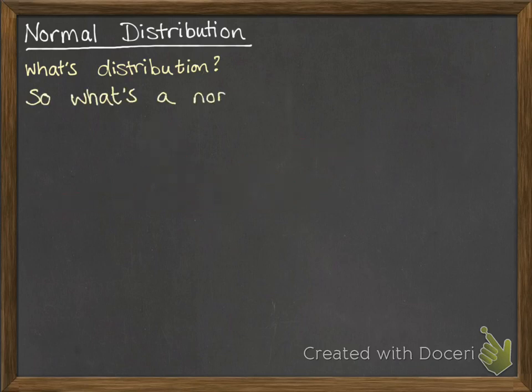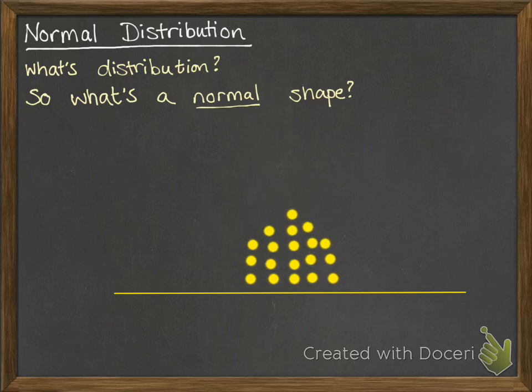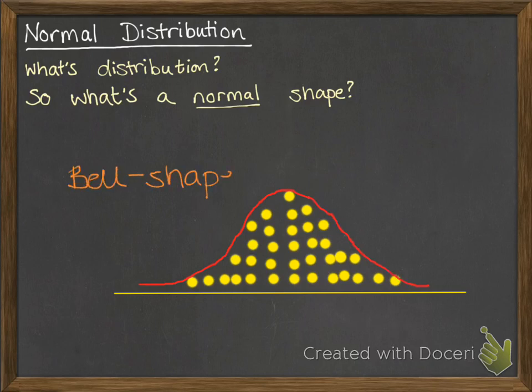So what is it when we have a normal distribution? That means that when we plot those dots, we expect that most of them will be somewhere around the middle. We might have a few that are out on the edge, but they'll be a lot less than what was in the middle section. When we get a shape like this, that's called a normal distribution, and it creates a bell-shaped curve.